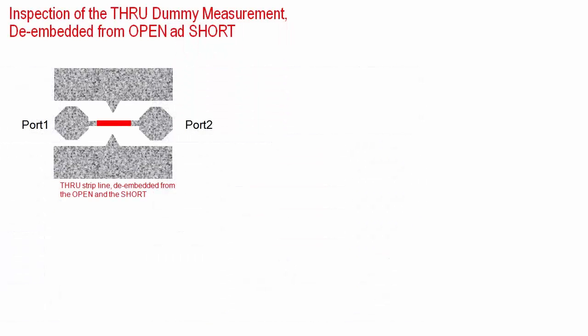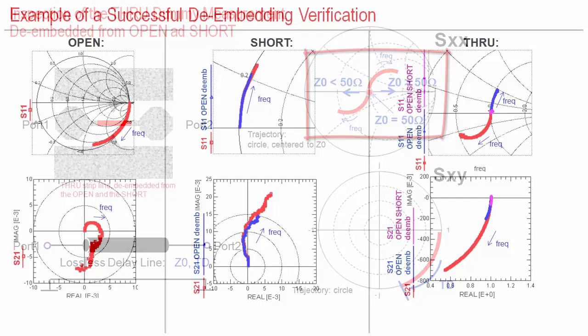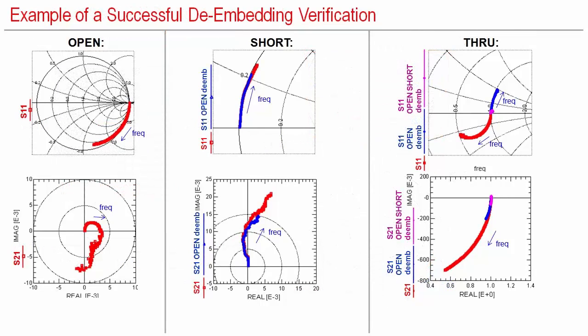When this through dummy is de-embedded from both the open and the short, it should represent a delay line with a magnitude of 1, a positive and physically realistic delay time value TD and a realistic value of the characteristic impedance Z0. The example shown here depicts such a successful de-embedding and therefore indicates a good on-wafer dummy layout.